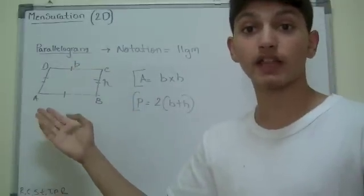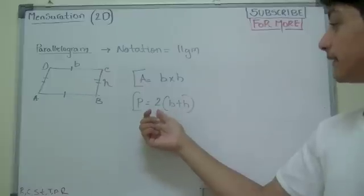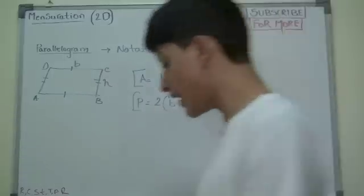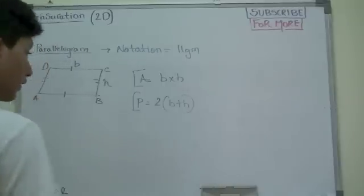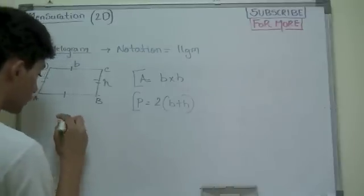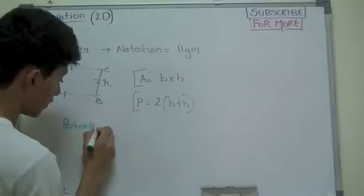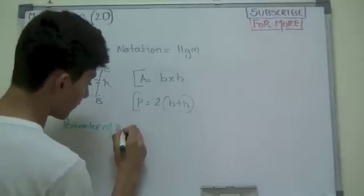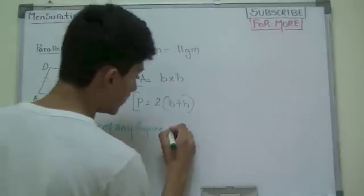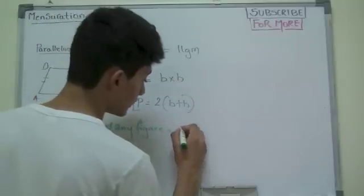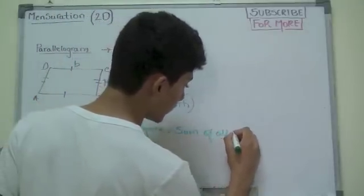Now in order to find the perimeter, it's basically 2 times B plus A. And even if you don't remember the perimeter of any figure, the perimeter of any figure would be equal to sum of all the sides.